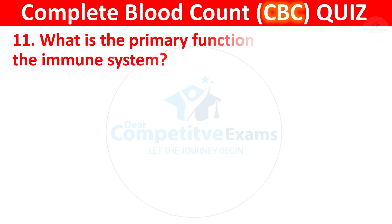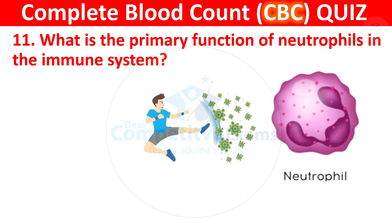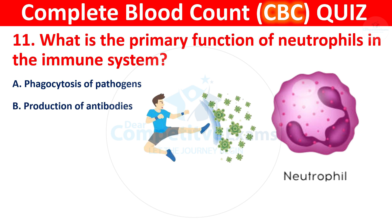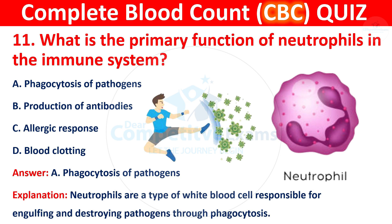Question 11: What is the primary function of neutrophils in the immune system? Your options are phagocytosis of pathogens, production of antibodies, allergic response, or blood clotting. The correct answer is A, phagocytosis of pathogens. Neutrophils are a type of white blood cell responsible for engulfing and destroying pathogens through phagocytosis.